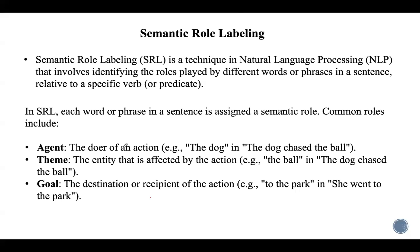Some common roles in semantic role labeling: the first role is Agent, which is the entity performing the action. For example, in 'the dog chased the ball,' the dog is performing the action, so dog becomes the Agent. Then Theme is the entity being affected — the ball is the Theme. Goal is the destination or recipient of the action, for example 'she went to the park' — 'to the park' is the Goal.